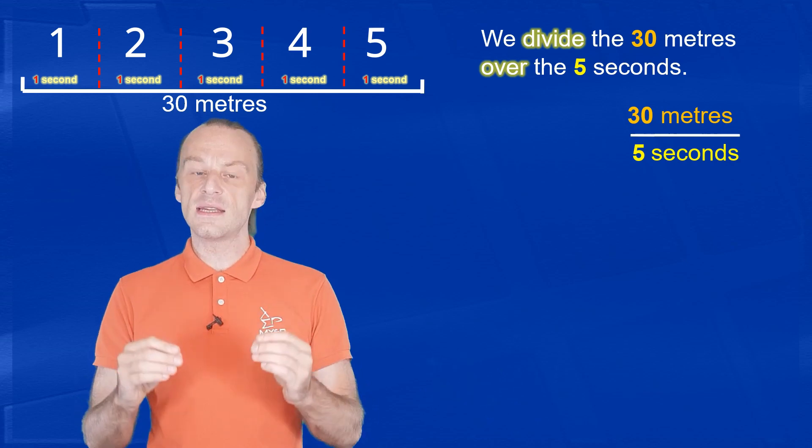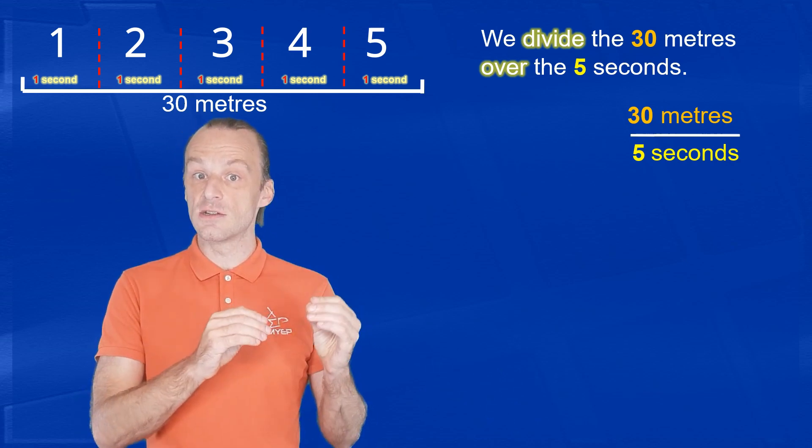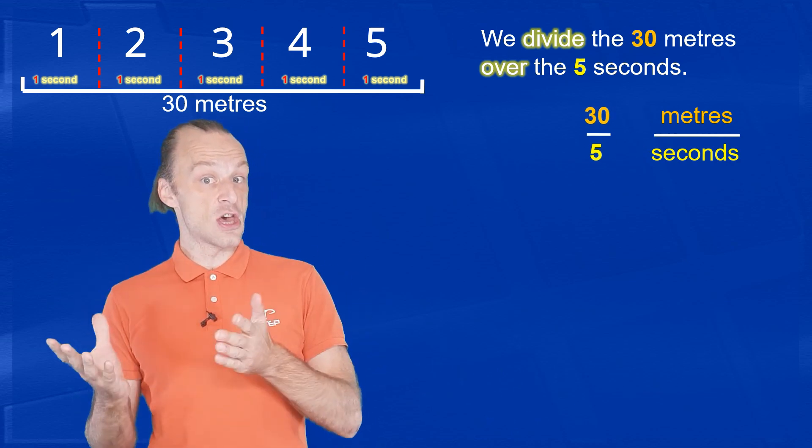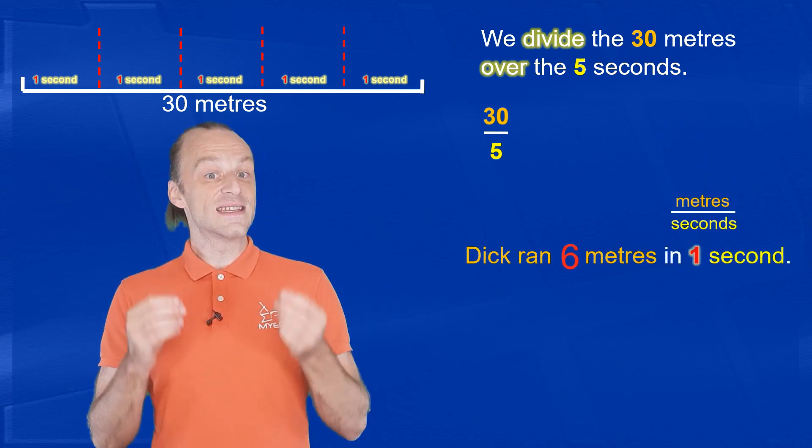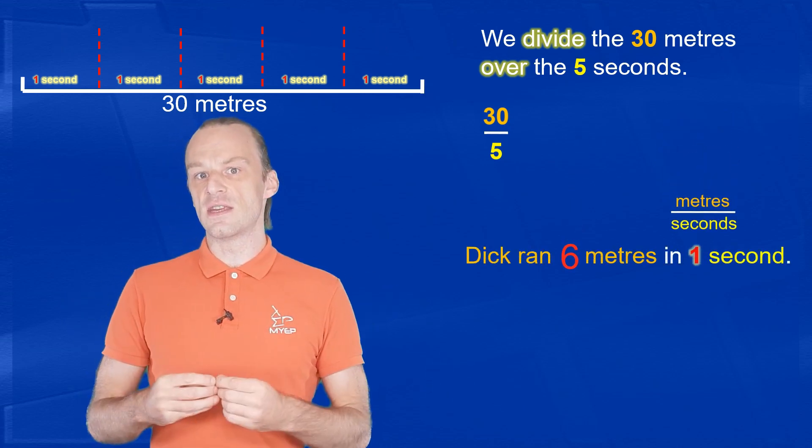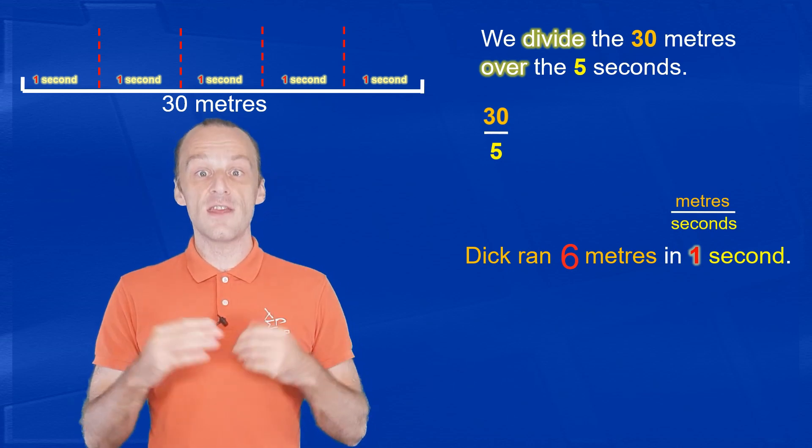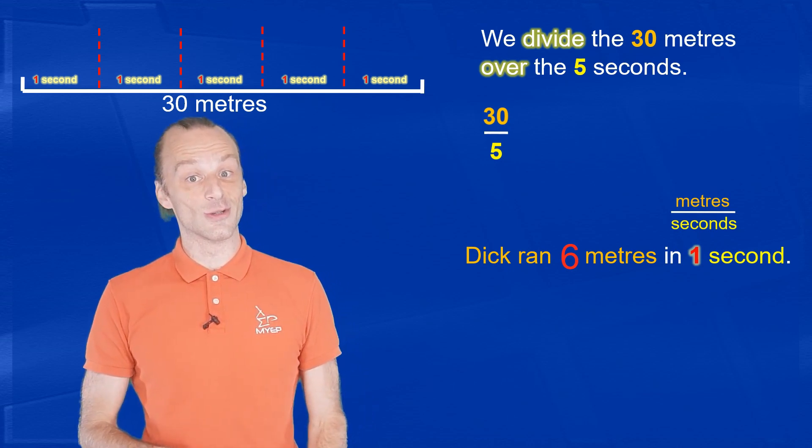If we divide the 30 meters over the five seconds, we will get the number of meters he ran in each second. And we can see that 30 divided by five is six. So Dick ran six meters in each of his seconds, at least if he ran the same speed the whole time.